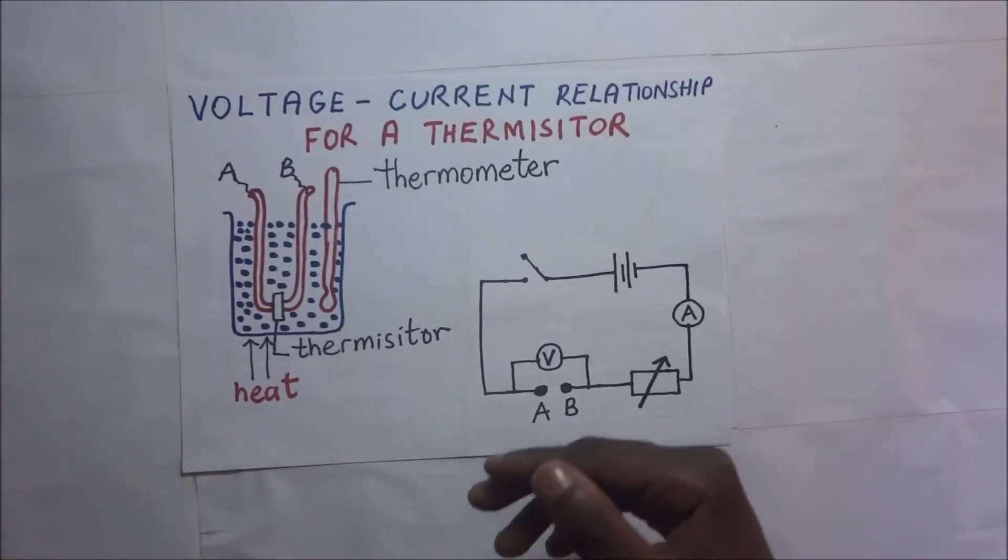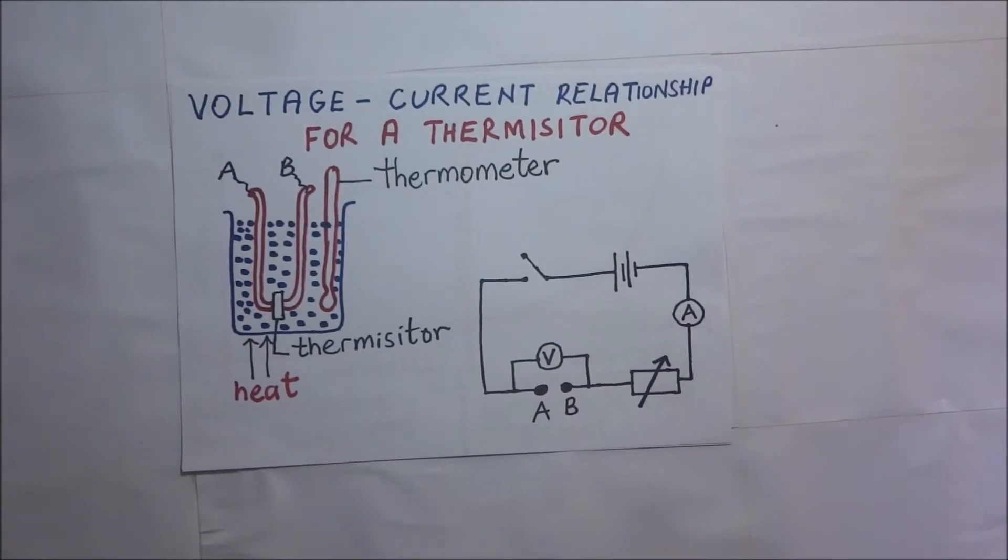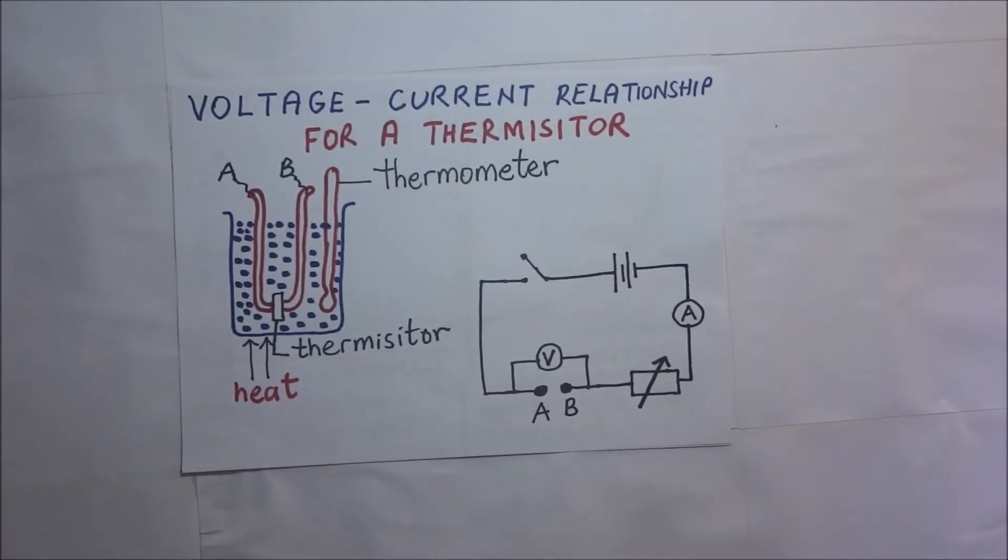With metals, when the temperature of a metal wire or conductor increases, its resistance increases also. When a conductor has its resistance increasing with increasing temperature, we refer to such a conductor as having a positive temperature coefficient of resistance.